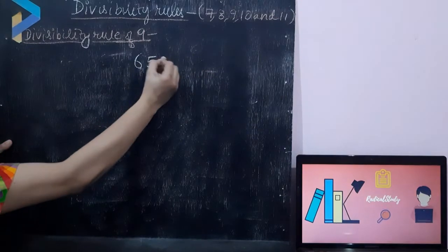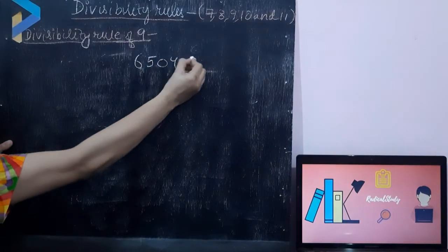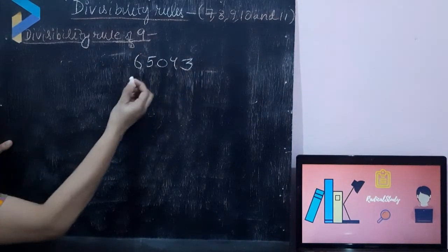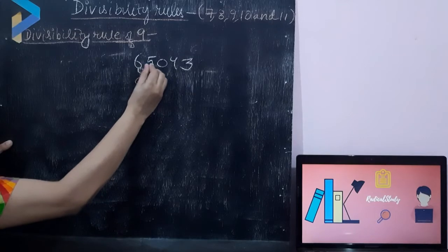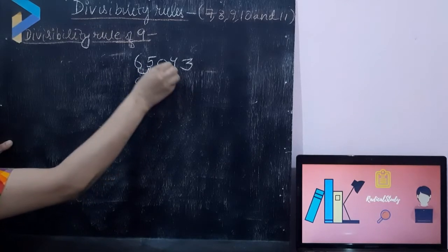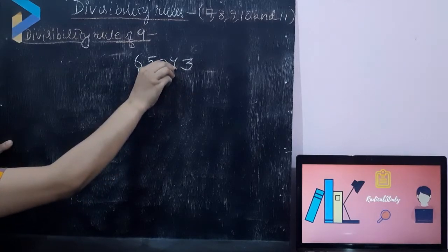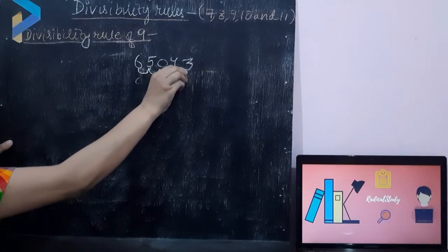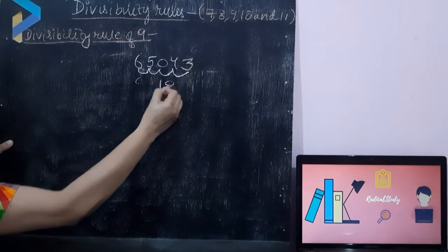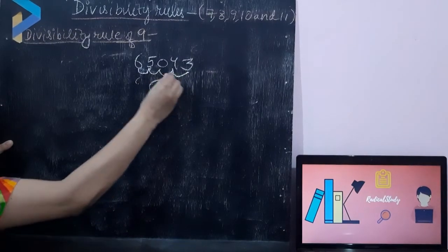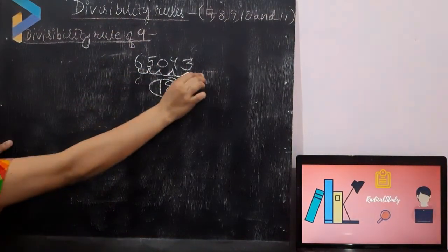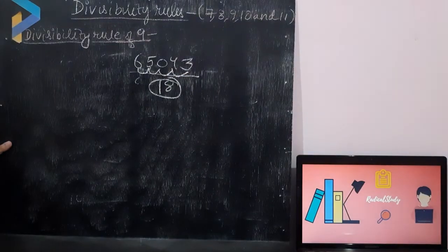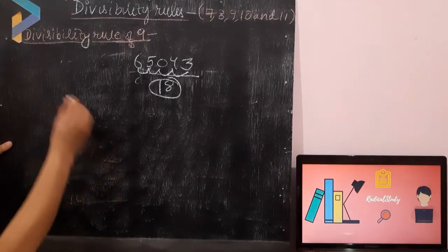Let's take one example. We have to add the numbers: 6 plus 5 is 11, 11 plus 0 is 11, 11 plus 4 is 15, 15 plus 3 is 18. So 18 is divisible by 9, which means the whole number is divisible by 9.